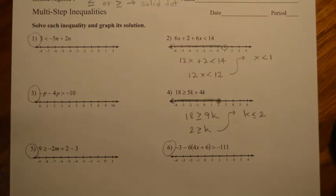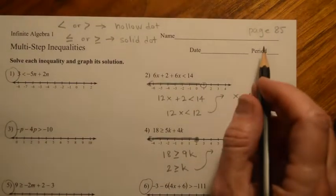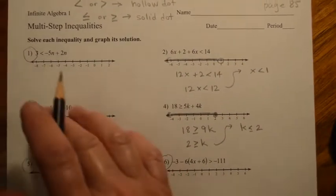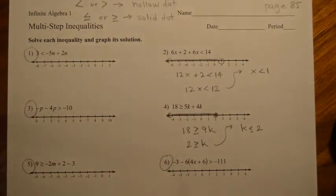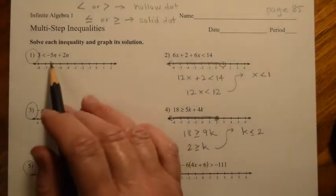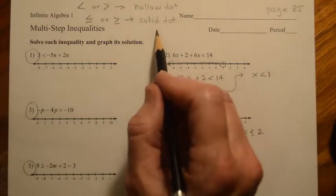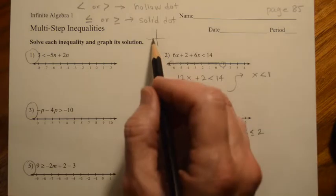Hey guys, I just wanted to pick up where we left off in class on Tuesday. So if you remember, we were on page 85 in your workbook, and we had just started doing multi-step inequalities. We said we were going to graph these on a number line instead of an x-y plane because there was only one variable.